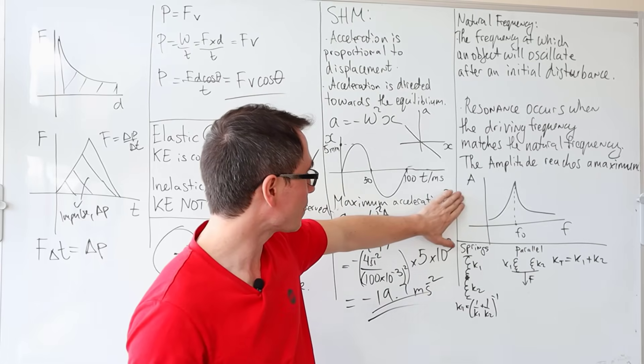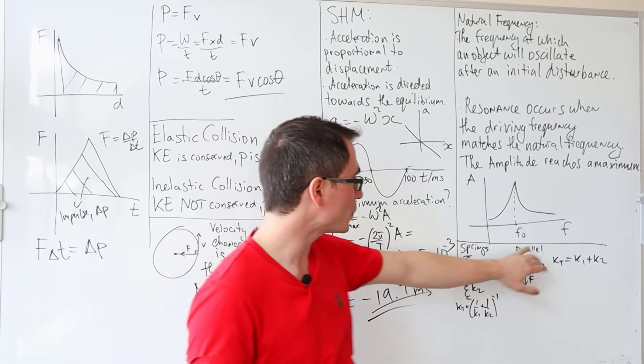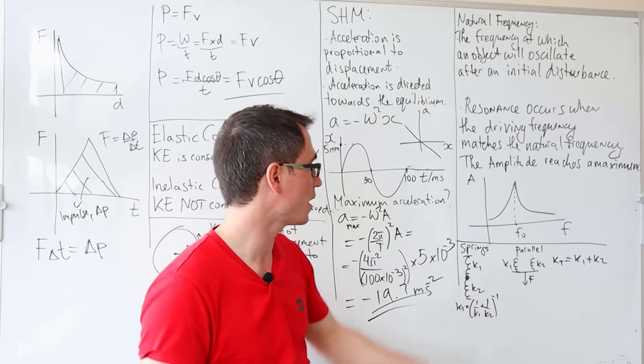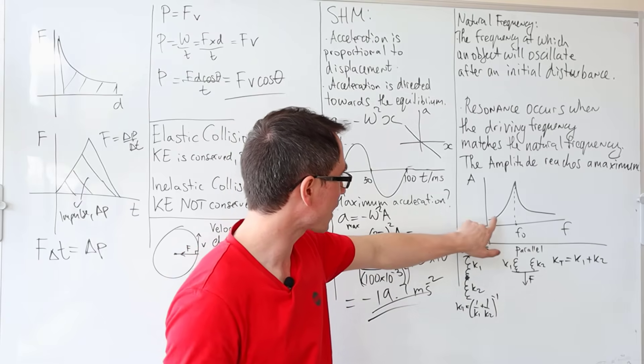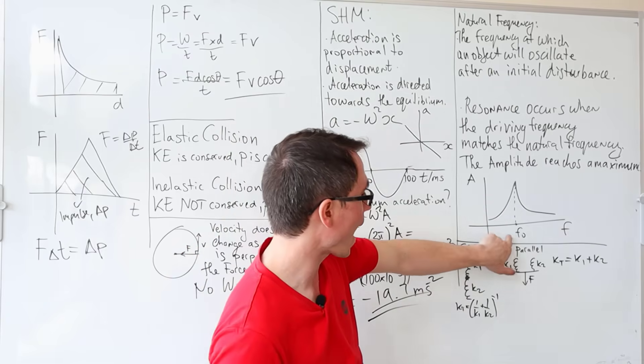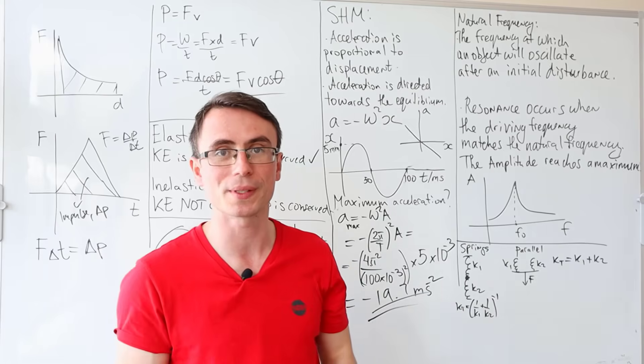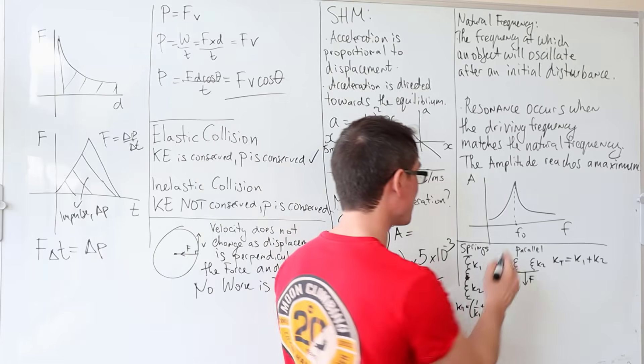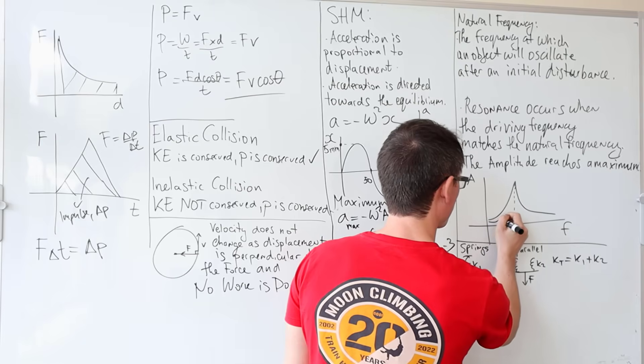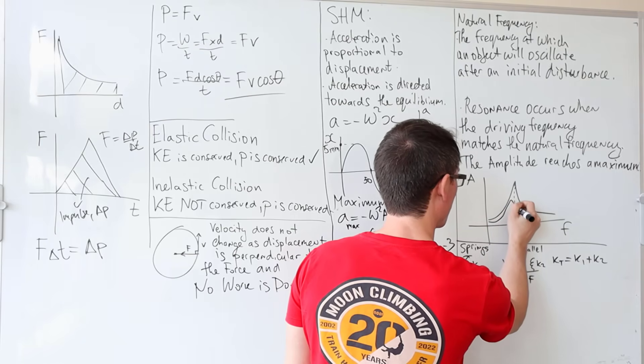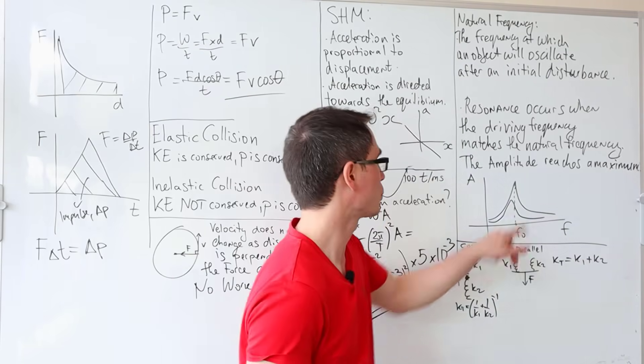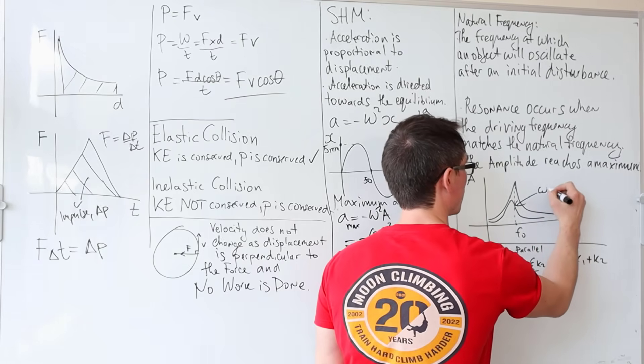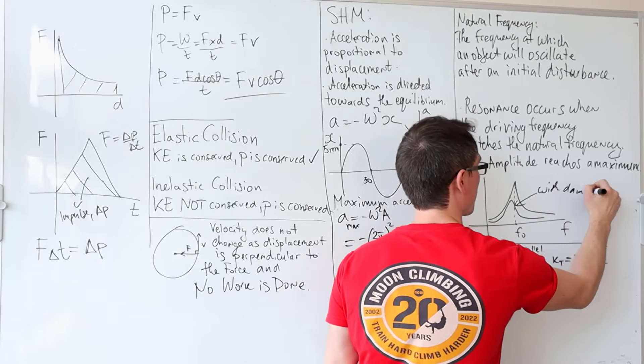When that happens, the amplitude reaches a maximum. This is represented by this classic amplitude against frequency curve, and we can see that it's reached a maximum at the natural frequency. Notice that to introduce damping into the system, the peak is going to be lower and a little bit more to the left. So this one here is with damping.